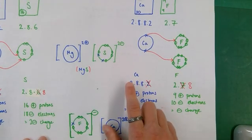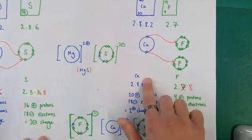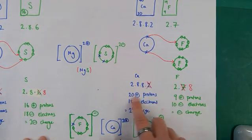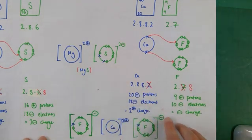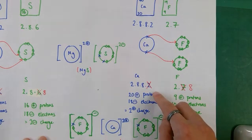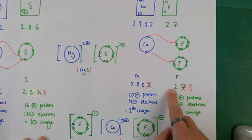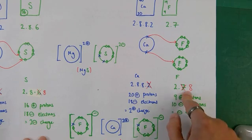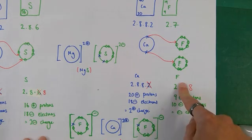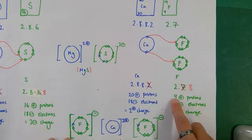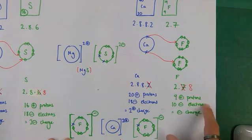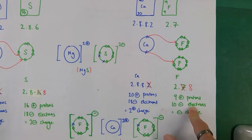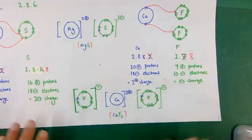The calcium had electron configuration 2, 8, 8, 2 as an atom, but as the ion it has lost those 2 outermost electrons. It still has its 20 protons in the nucleus but now only has 18 negative electrons in the surrounding shells, giving it an overall 2+ charge. The 2 fluorine atoms have both gained an electron, changing their configuration from 2, 7 to 2, 8. Each fluoride ion still has 9 protons but now has 10 electrons surrounding the nucleus, giving each an overall charge of minus 1.